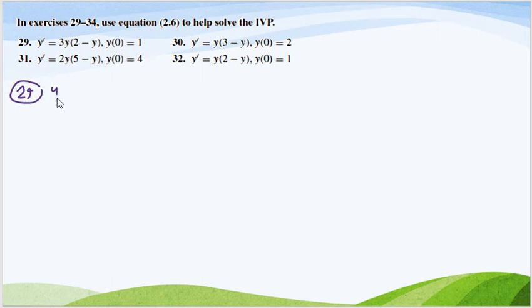The equation is y prime equals 3y times 2 minus y with initial condition y at 0 equals 1.